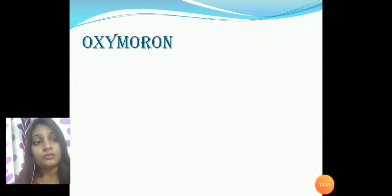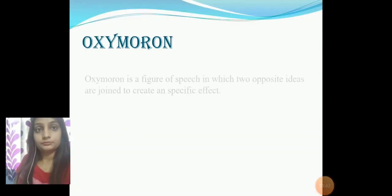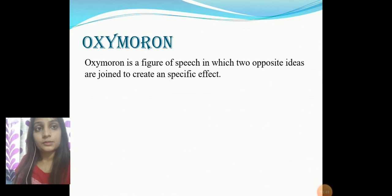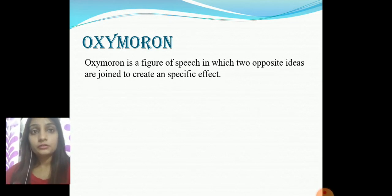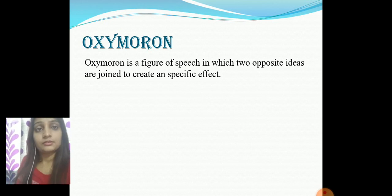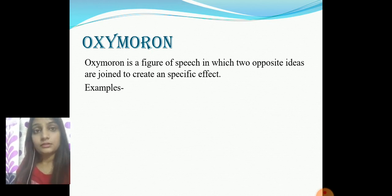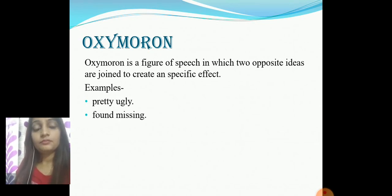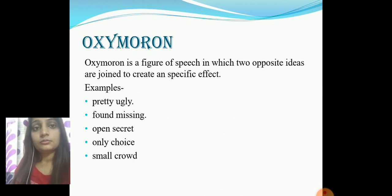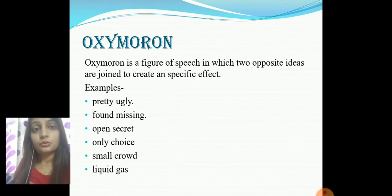Next is oxymoron — a figure of speech in which two opposite ideas are joined to create a specific effect. In the same expression, two words that are opposite are put together for a specific effect. Examples include: pretty ugly, found missing, open secret, only choice, small crowd, and liquid gas. In each case, the two words combined are totally opposite to each other.